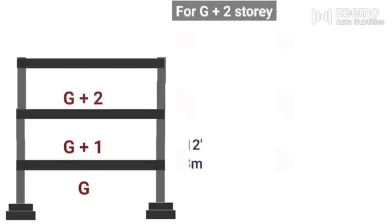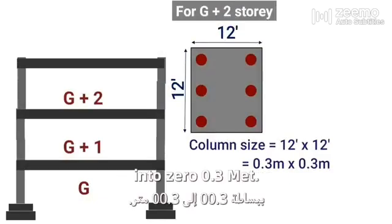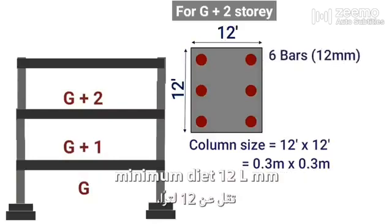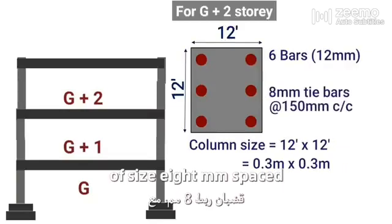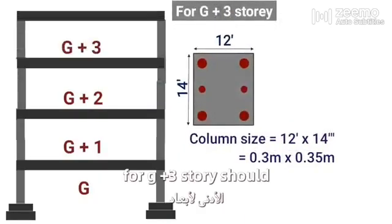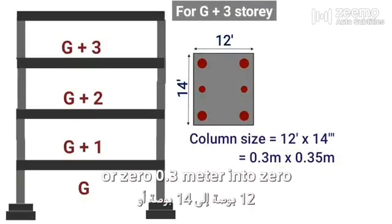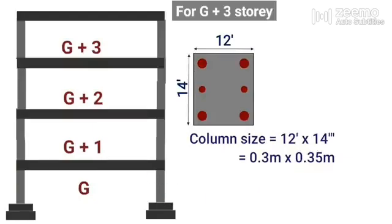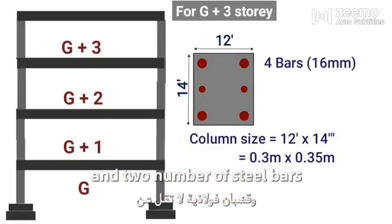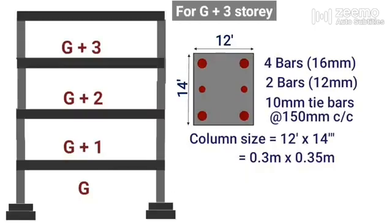For G plus 3 storey, the minimum column size should be taken as 12 inch x 14 inch or 0.3m x 0.35m. We should provide a minimum of 4 steel bars of minimum diameter 16mm and 2 steel bars of diameter 12mm, plus tie bars of size 10mm spaced at 150mm center to center.